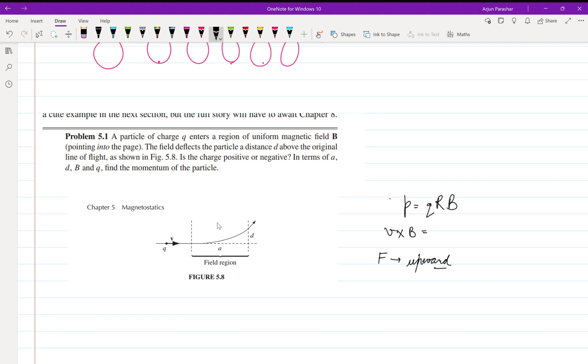The thumb will give you the direction of force. So thumb is again pointing upward. The charge will go upward. That is why it has given the direction upward. As it is going upward and the direction of force is also upward, that is why charge is positive here.